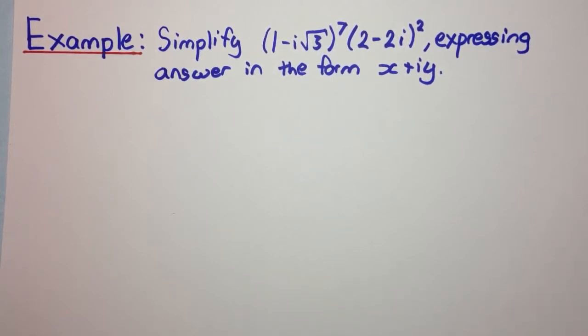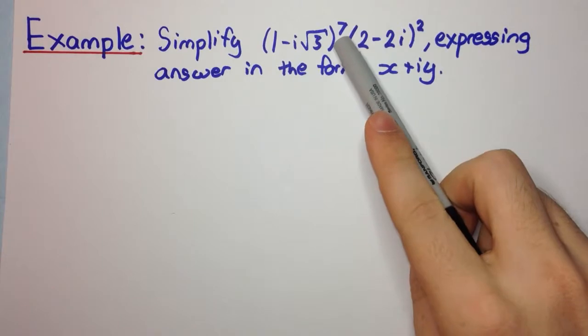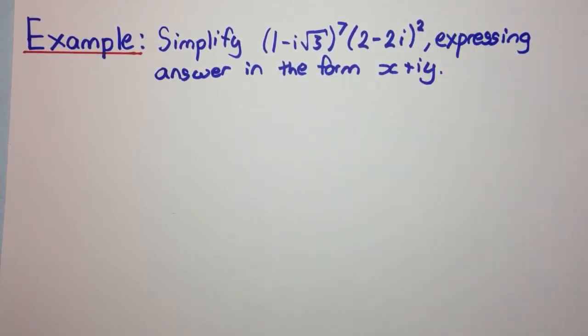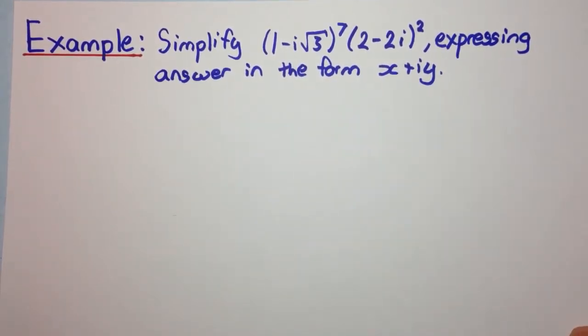Now there's a very tedious way, and we could expand this out to the power 7 using the binomial theorem, expand this out to power 2, but obviously that would take way too long. So this is why we have our mod arg form and De Moivre's theorem. This is where it becomes useful.